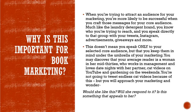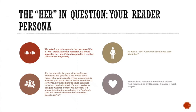You may discover that your average reader is a woman in her mid-30s who works in management and loves date nights with a partner, cat videos on YouTube, and gardening at the weekends. You're not going to tweet endless cat videos because of this, but every time you approach your marketing you will wonder: would she like this? Will she respond to this? Is this something that will appeal to her? This leads us to the idea of the reader persona — a way to really pinpoint your core audience in a very specific way. By gathering all of your research and putting together one individual, it's much easier to imagine whether a tweet will succeed.